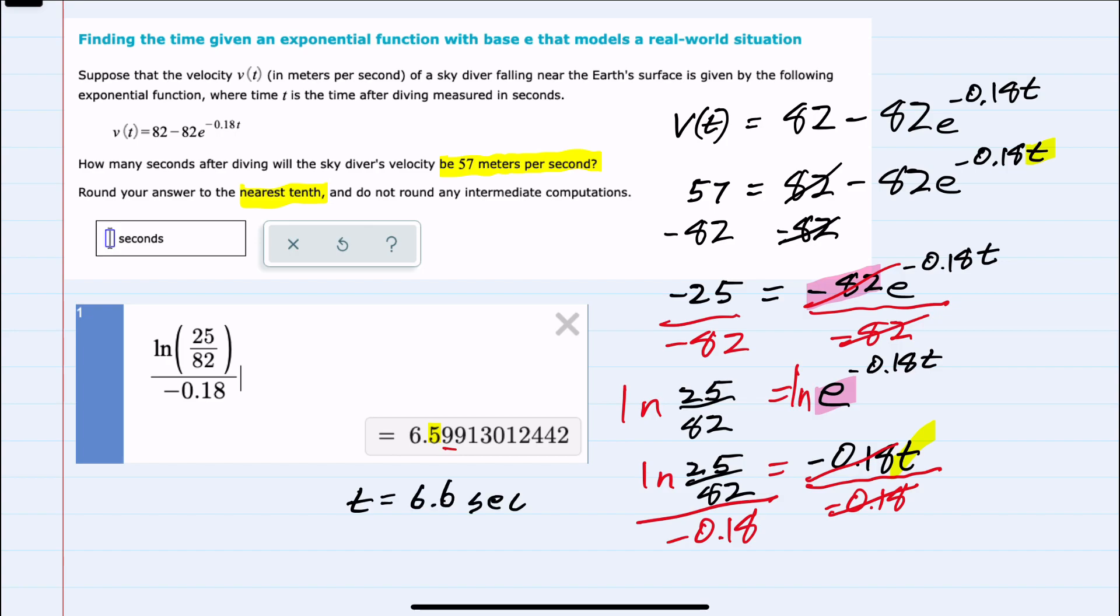After the skydiver jumps, their speed will be the 57 meters per second that we were asked to calculate.